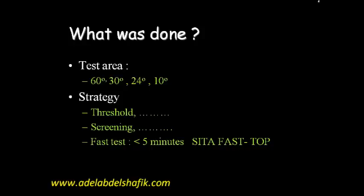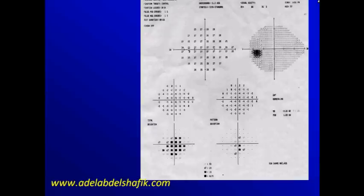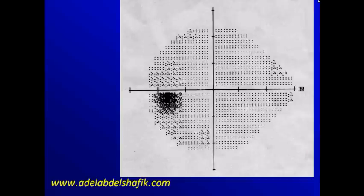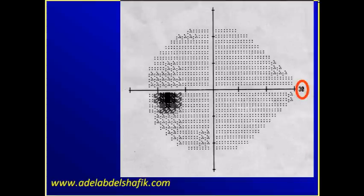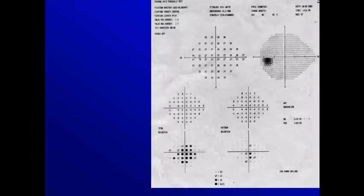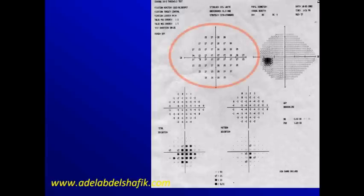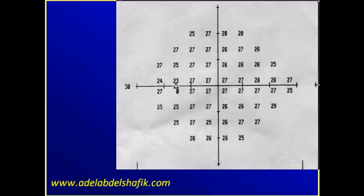Here this is the printout of the Humphrey. If you look at the gray scale here you can see we have a number here, 30, so this can be a 30 or 24 degree test. This is the location of the blind spot. The blind spot is to the left side of the vertical, so this is a left eye.